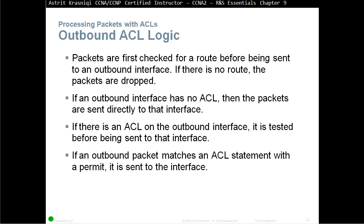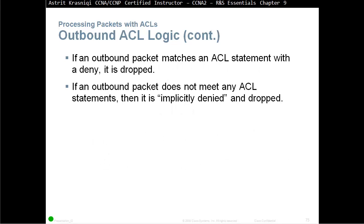Outbound ACL logic: packets are first checked for a route before being sent to an outbound interface. If there is no route, the packets are dropped. If an outbound interface has no ACL, the packets are sent directly to that interface. If there is an ACL on the outbound interface, it is tested before the packet is sent out. If it matches a permit, it is sent; if it matches a deny, it is dropped. If no ACL statement is matched, the packet is implicitly denied and dropped.